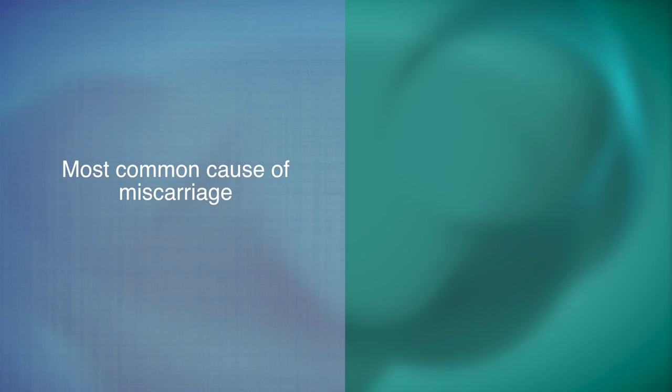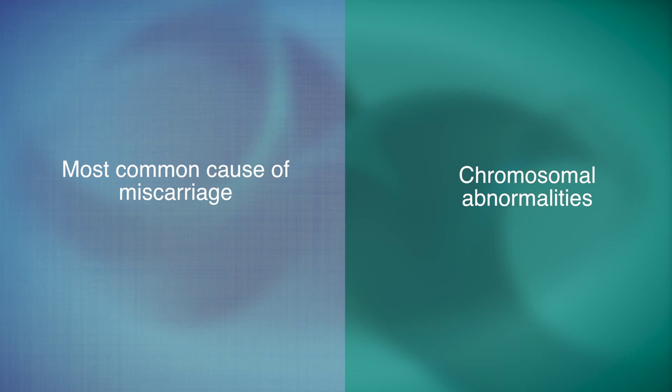The most common cause of miscarriage in humans is because of chromosomal abnormalities. Genetic testing of the pre-implantation embryo can also determine whether the embryo could be affected by aneuploidy.